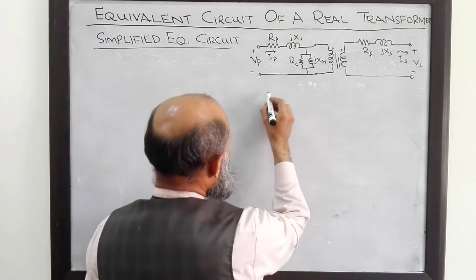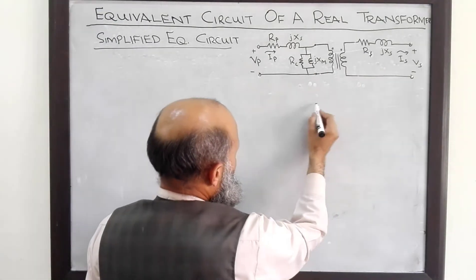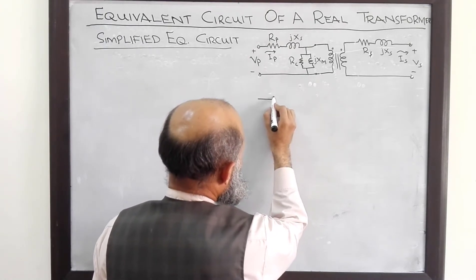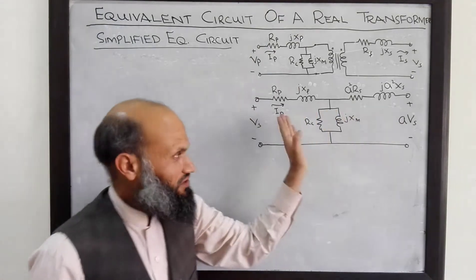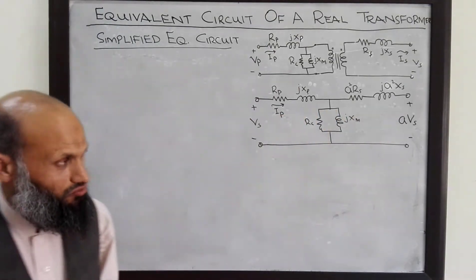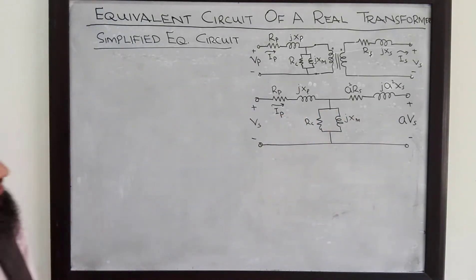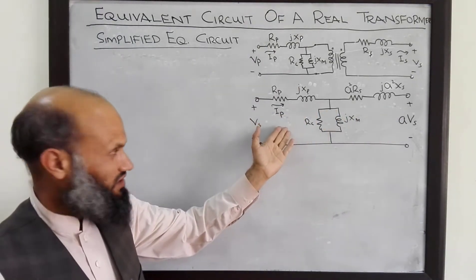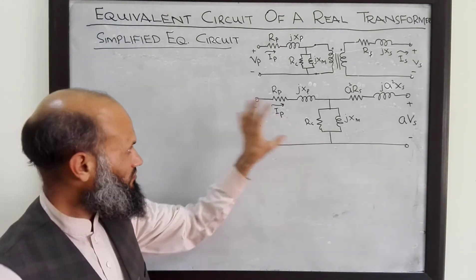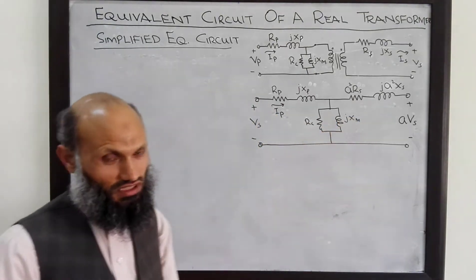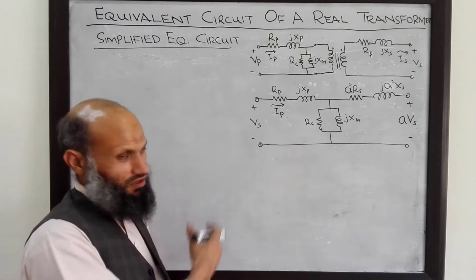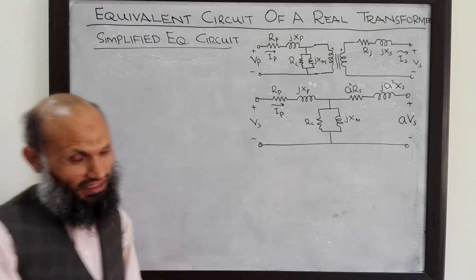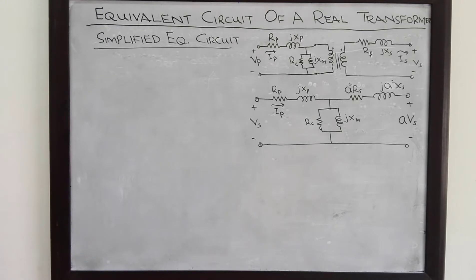This circuit referred to the primary side became this equivalent circuit. Here is the same circuit with all quantities referred to the primary side. This circuit is a little bit difficult to analyze because it involves more loops. If we can somehow reduce the number of loops, then the analysis of this electrical circuit will become easier.